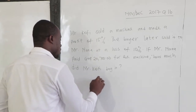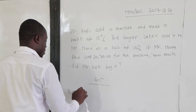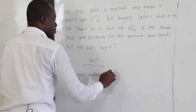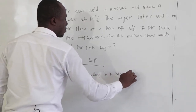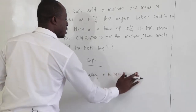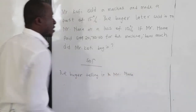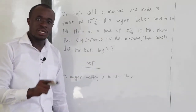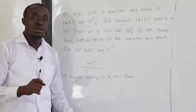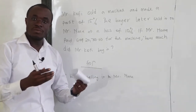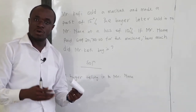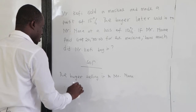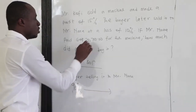Now there's a relationship here. The buyer later sold it to Mr. Nana at a loss of 10%. Because it is at a loss of 10%, the whole thing is 100%, so at a loss of 10% means we have to reduce it by 10%, or subtract 10% from 100. So clearly 90% is corresponding to 20,700.